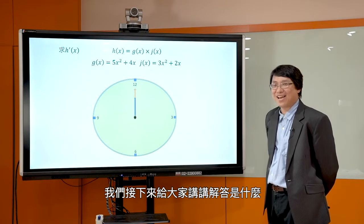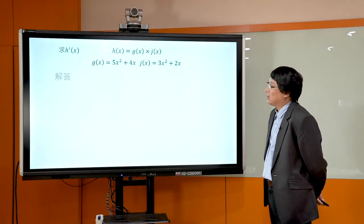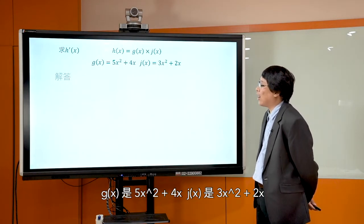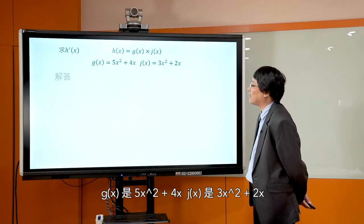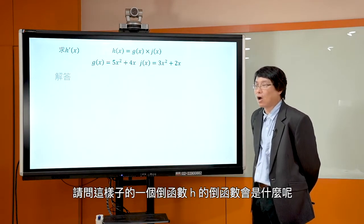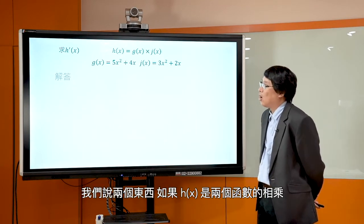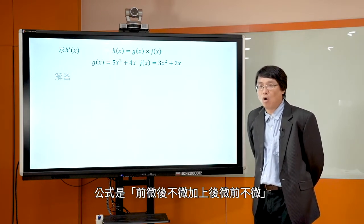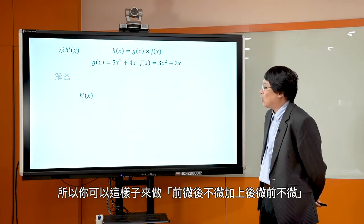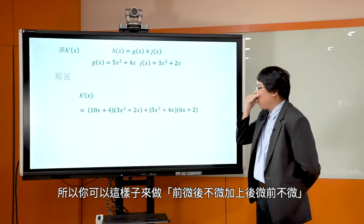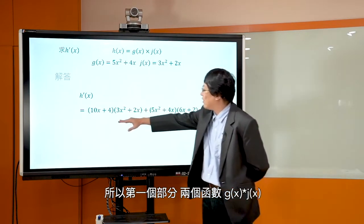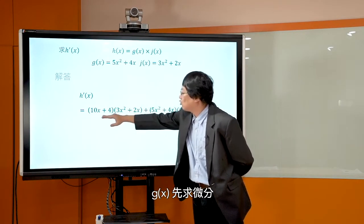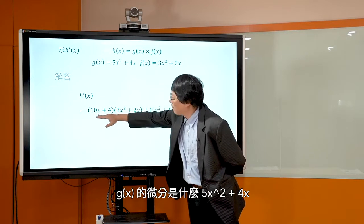时间到，不知道大家有没有做出来呢？好，我们接下来来给大家讲讲解答是什么。如果 H(x) = g(x) × j(x)，g(x) = 5x² + 4x，j(x) = 3x² + 2x，请问这样子的导函数 H'(x) 会是什么呢？我们说两个东西如果是两个函数的相乘，公式是前微后不微，加上后微前不微。